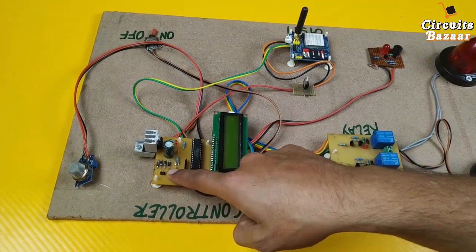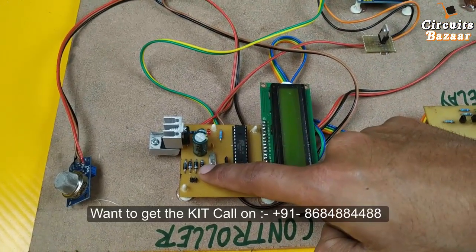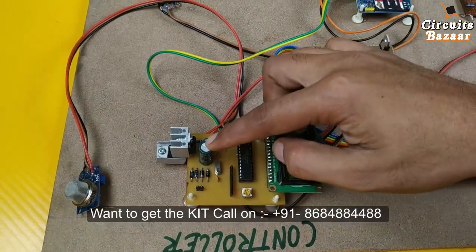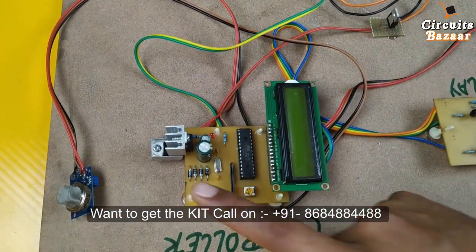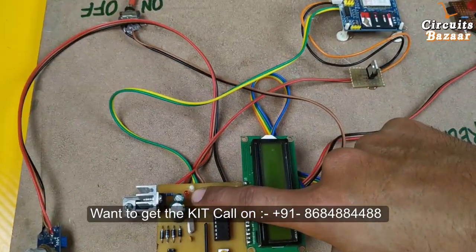That's why we have used bridge rectifier over here. These are the four diodes acting as a bridge rectifier, and these two capacitors act as a filter if you are using transformer. Right now we are using adapter. This is the power LED which will turn on whenever you provide power supply to the circuit.